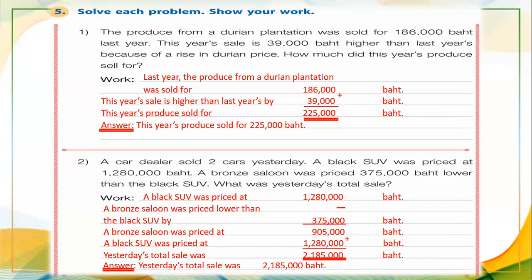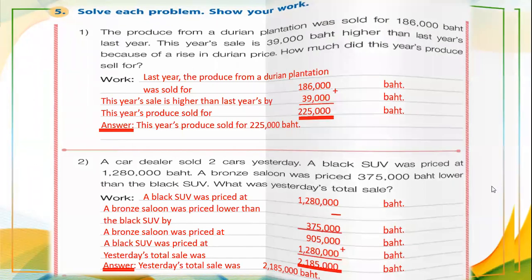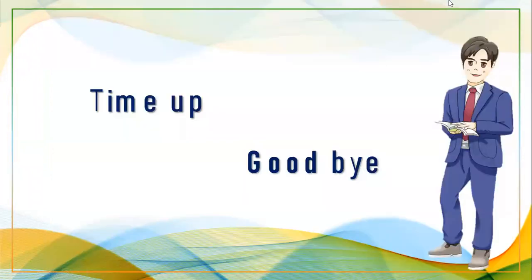To summarize: first we found the price of the bronze saloon, and we already had the price of the black SUV. Then we added both car values to get the total sale of yesterday — two million one hundred eighty-five thousand baht. That's all for today's mathematics class. See you in the next class. Take care, take a ten-minute rest and come back.